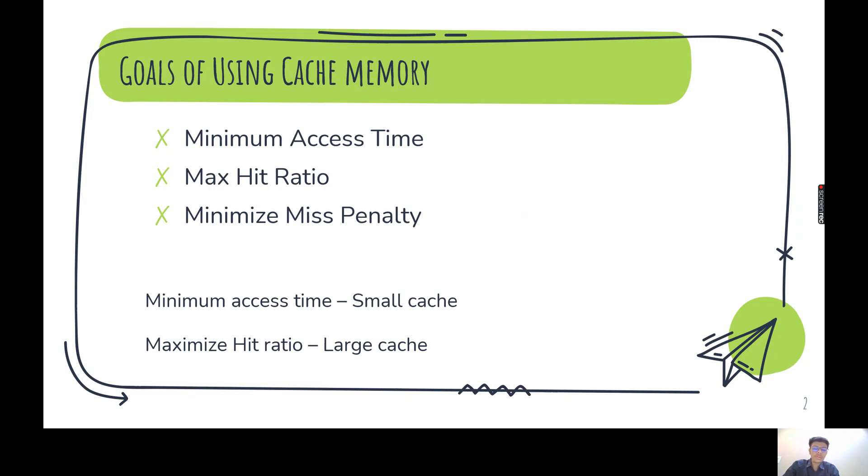Now for the minimum access time, the memory should be small. Thus, the smaller the memory faster the execution is correct. So for the minimum access time, we require small cache, but for the hit ratio to be maximum, we require larger memory.